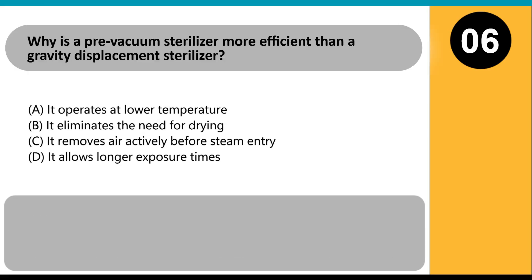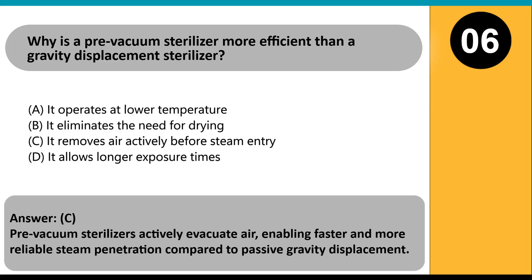Why is a pre-vacuum sterilizer more efficient than a gravity displacement sterilizer? A. It operates at lower temperature. B. It eliminates the need for drying. C. It removes air actively before steam entry. D. It allows longer exposure times. Answer: C. Pre-vacuum sterilizers actively evacuate air, enabling faster and more reliable steam penetration compared to passive gravity displacement.